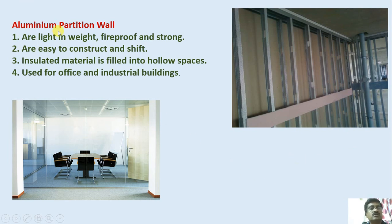Regarding aluminum partition walls — these are light in weight, fireproof, and strong. They are easy to construct and shift. Insulated material is filled into hollow spaces, and they are used for office and industrial buildings.